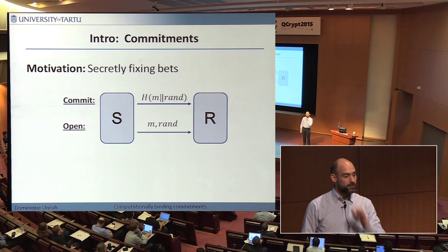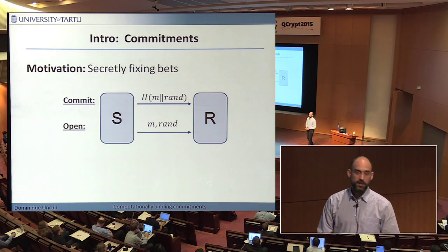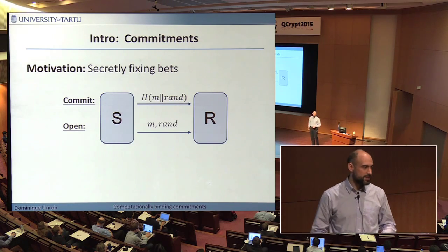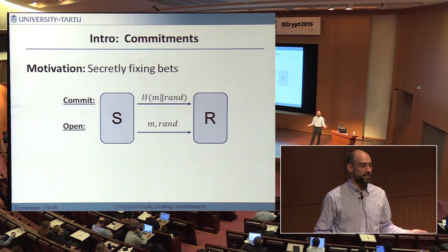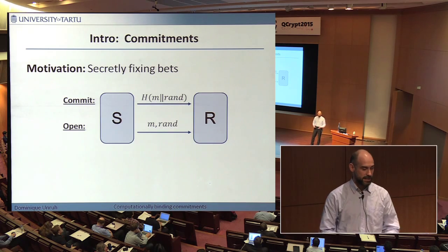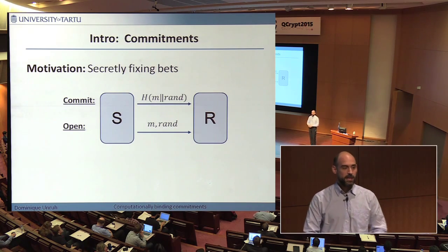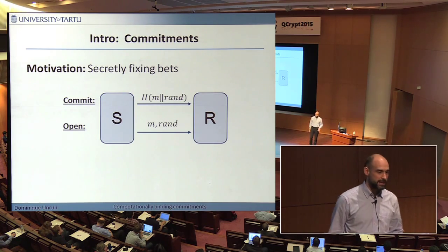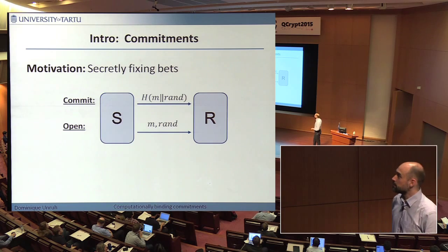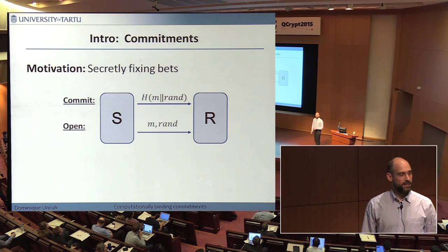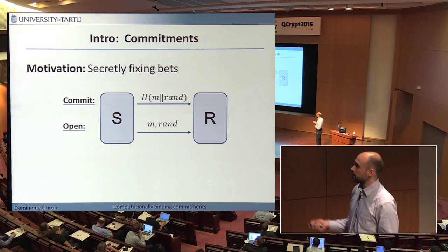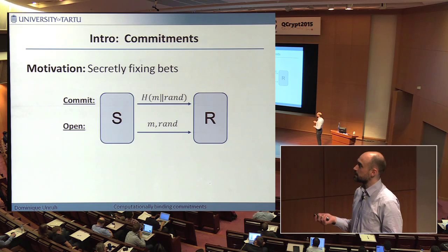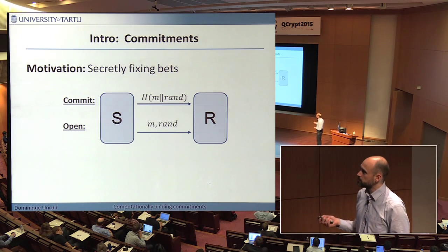So I need to be able to fix on a horse without you learning it. In the physical world we might use a sealed envelope — I put the name in an envelope and we open it later when the race is over. But digitally there are other ways to achieve that, and the way to do this is a so-called commitment.